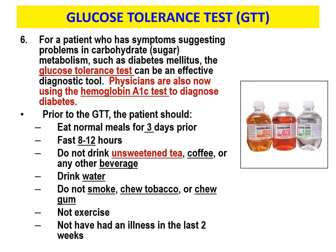Nowadays, the gold standard is the hemoglobin A1c test — the tattletale test — which is usually what we use to diagnose diabetes. Having said that, you will encounter many situations doing GTT tests on women suspected of having gestational diabetes, or trying to rule it out. She may have a family history of diabetes or other signs and symptoms leading her doctor to check whether she is developing or has already developed gestational diabetes.